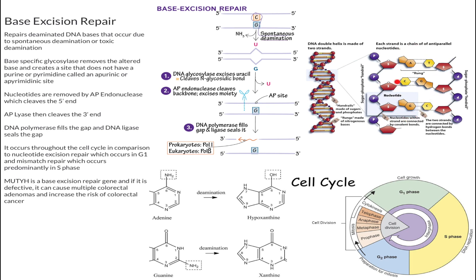The glycosylase is going to remove the nitrogenous base. But in DNA repair you can't just remove the nitrogenous base — you also have to remove the backbone of the phosphate and the sugar. This is where you need to remember what removes the 5' end and what removes the 3' end. The enzyme AP endonuclease will cleave the 5' end of DNA, and then AP lyase will cleave the 3' end.